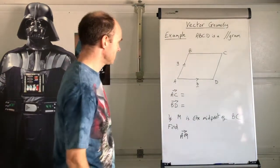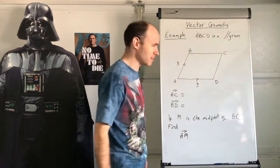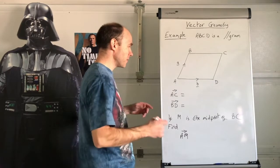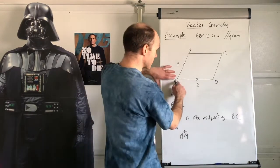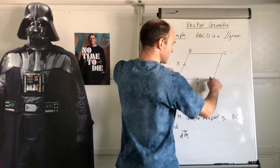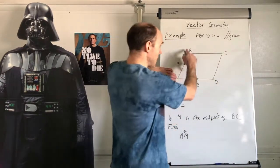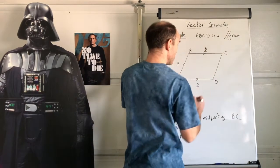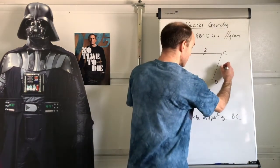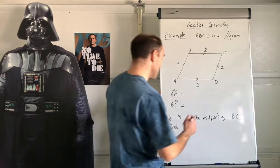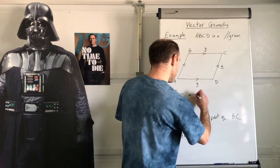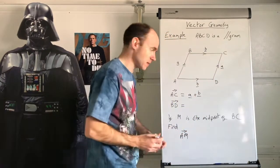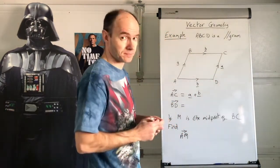Okay, I'm going to go over the answers. A to C — you can go this then this, or this then this — either way, you get a plus b. Even though I haven't labelled it before, you should know that DC is b and DA is a because of the parallelogram law. So AC equals a plus b.